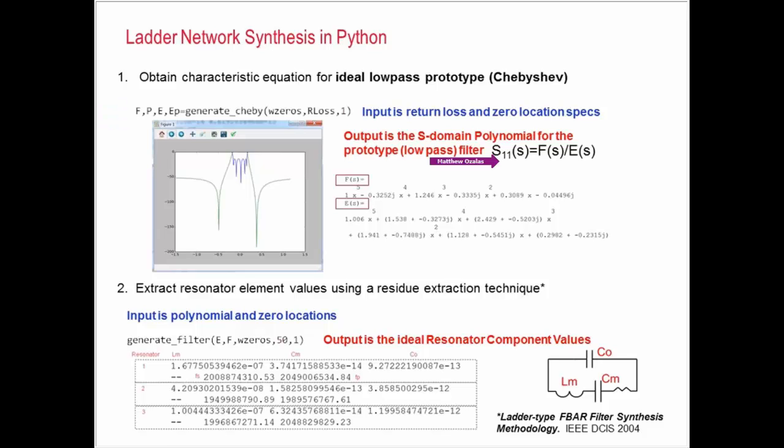So I've done that for the input impedance here. So the key is keeping the numerator and denominator S domain polynomials intact. And then I pass those S domain polynomials into a separate function to generate the filter. So I start with an ideal Chebyshev response. Then I generate a realistic filter with these resonator components. And basically what I do is I use this residual extraction technique where we look at the filter response at each of the zeros.